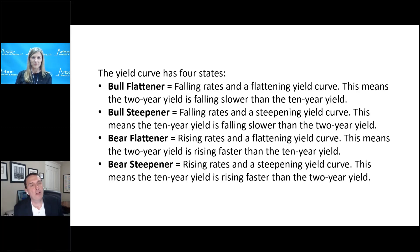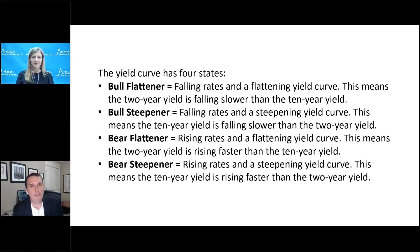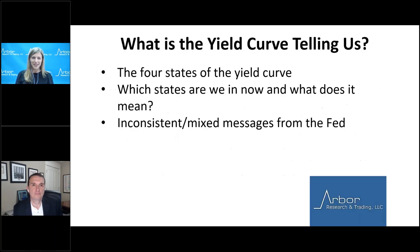You've got the bear flattener — rising interest rates, but short rates are going up faster than long rates. And you've got the bear steepener: rising interest rates, and 10-year yields are going up faster than 2-year yields. Each one of them has its own specific economic environment that would cause them to happen, and which one you have tells you a lot about the environment we're in.